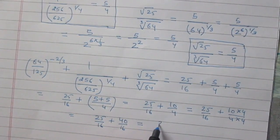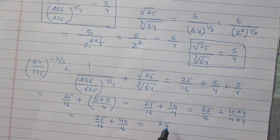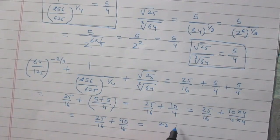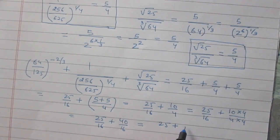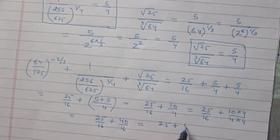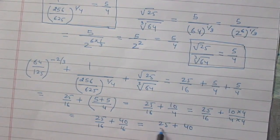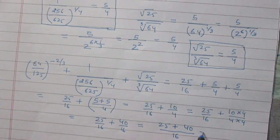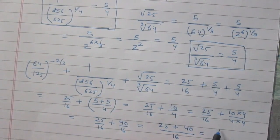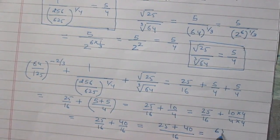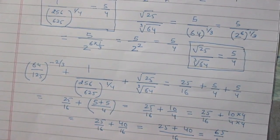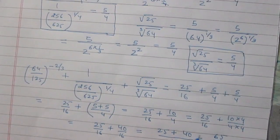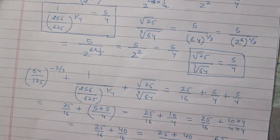Now we can simply add them since they have the same denominator. In the numerator we have 25 plus 40, and the denominator is 16. Finally, we get 65 divided by 16. This is the answer.